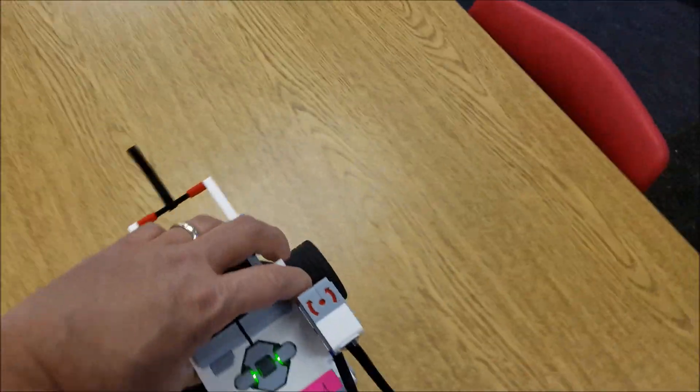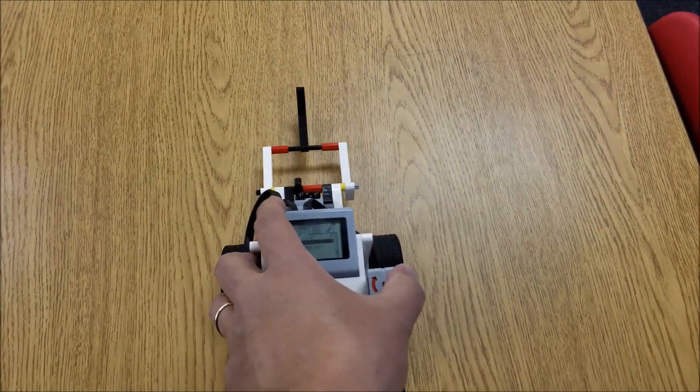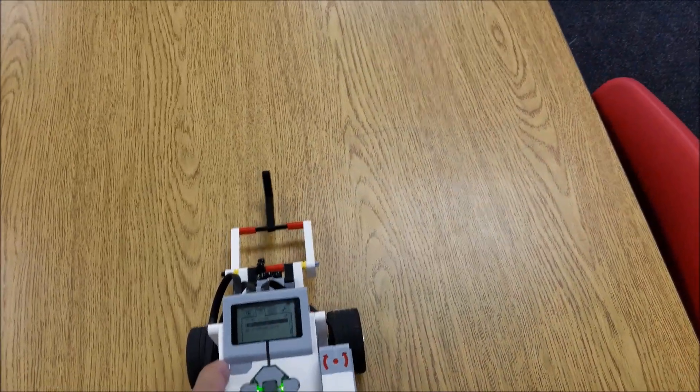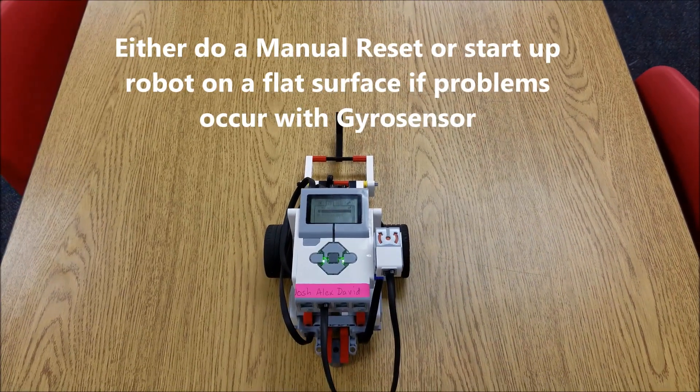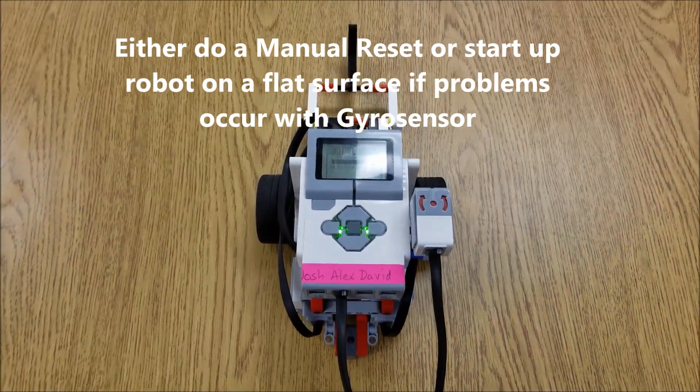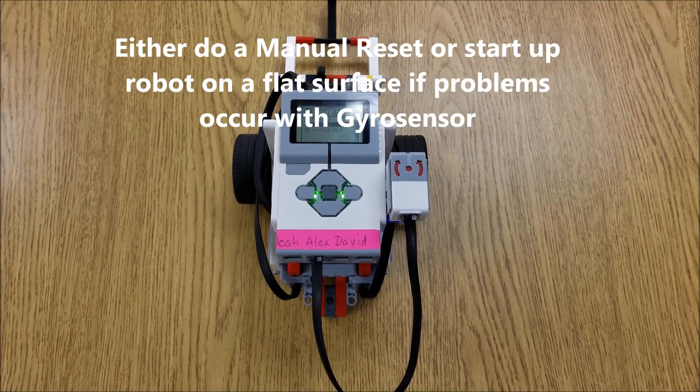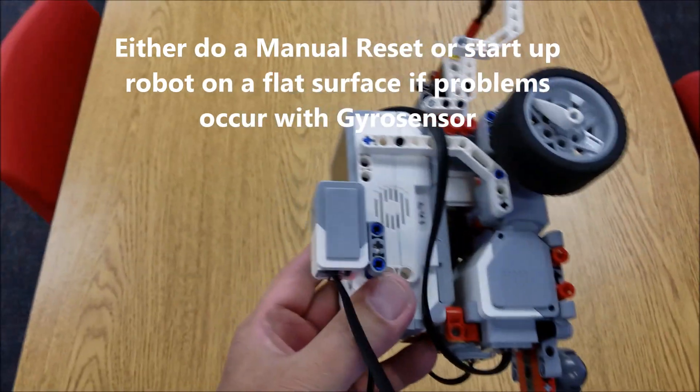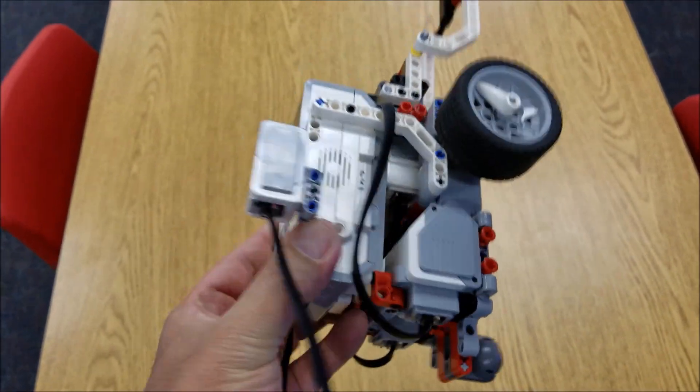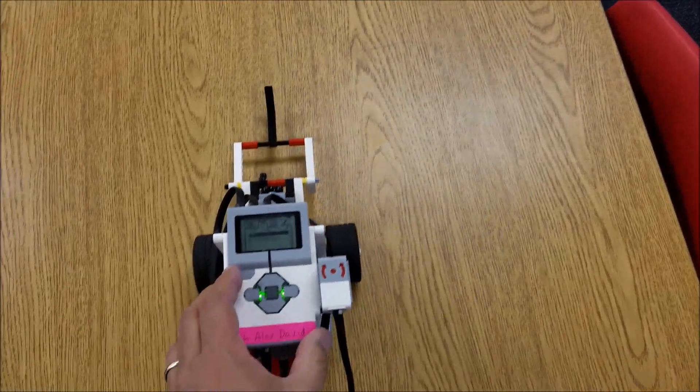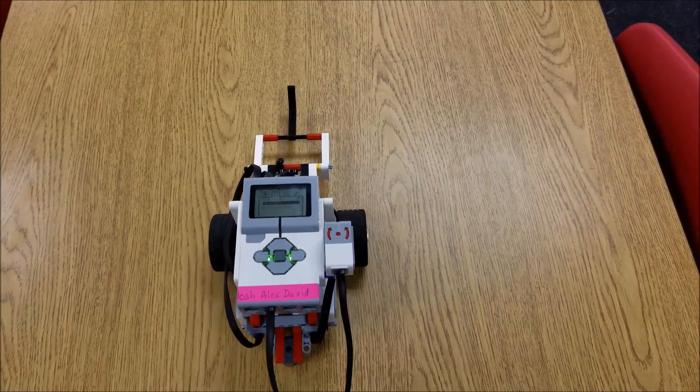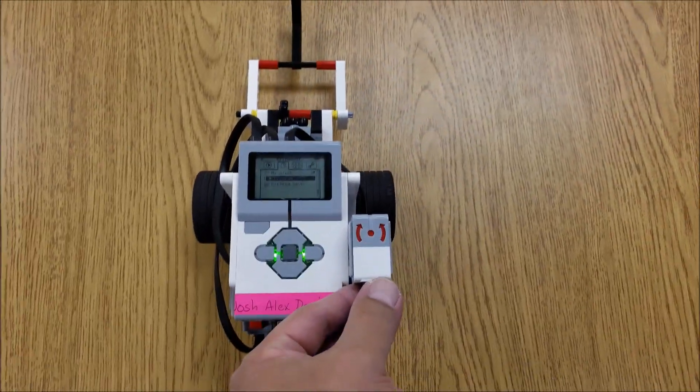So that's one of the key advice here for this gyro sensor: when you're going to start up your robot, make sure it's sitting on a flat surface. Because if you're holding it, this gyro sensor doesn't know where zero degrees is or what flat is.